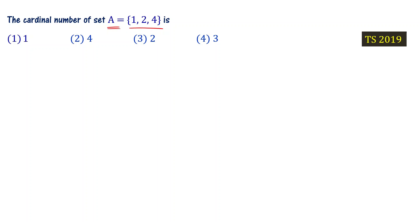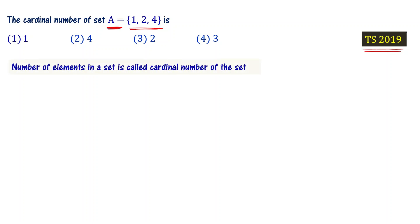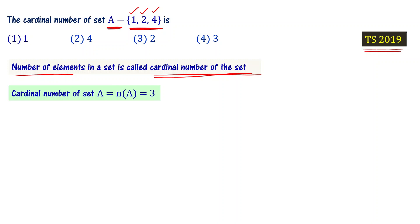What is the cardinal number of set A? Set A has got elements 1, 2, and 4. The cardinal number of a set is the number of elements in that set. Set A has 3 elements, so n(A) = 3. Choice 4 is the right answer.